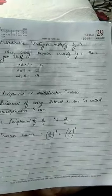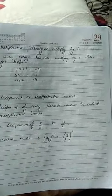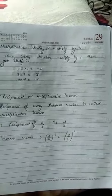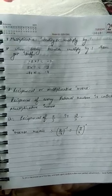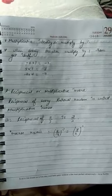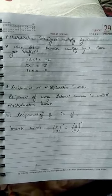Reciprocal of 2 upon 3 is 3 upon 2. And what is the meaning of inverse here? Inverse means that the power is minus 1, and we know that negative exponent becomes positive exponent.